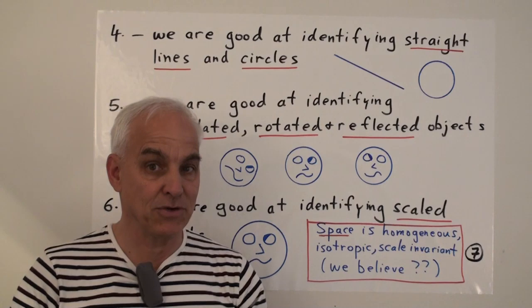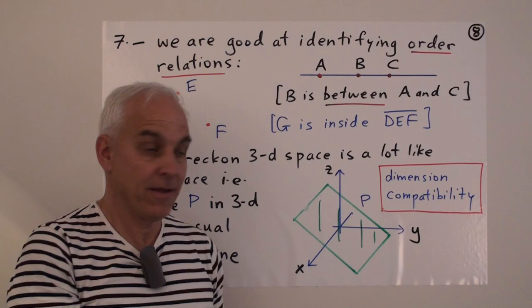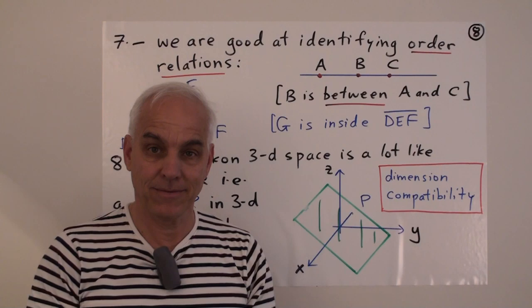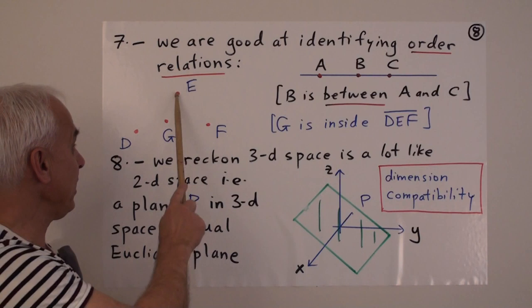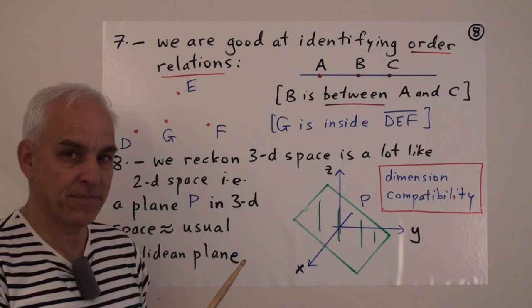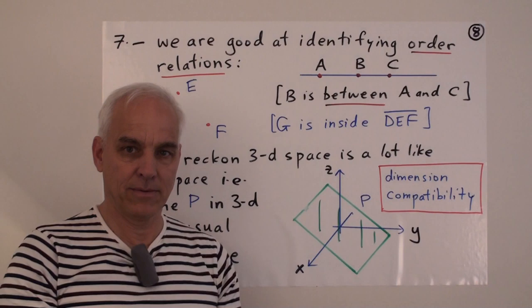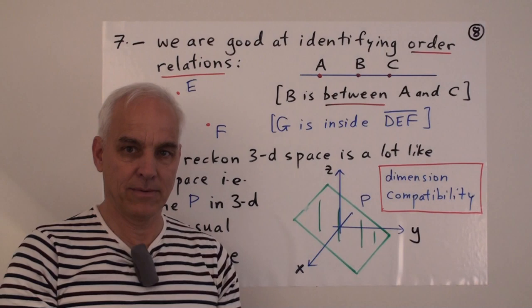There's a few more things too that are also quite important. Something else that we're very good at is identifying order relations. Here are three points on a line. A, B and C. We can immediately tell that B is between A and C. Here are four points on the plane. E, F, D and G. We can pretty easily tell just visually that G is inside the triangle DEF. That would be very easy if I actually drew the triangle. But even without the triangle, I think we can see just visually that the point G is going to be inside that triangle. So our capacity of making visual judgments and essentially calculations is really quite astonishing.